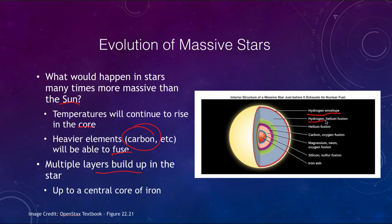and we get hydrogen and helium fusion, then helium fusion, then carbon and oxygen, magnesium, neon and oxygen, silicon and sulfur, and finally up to iron.